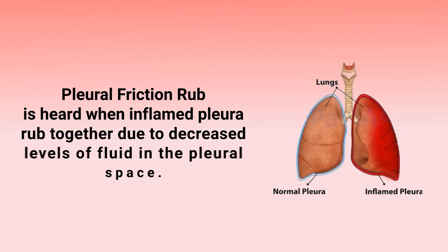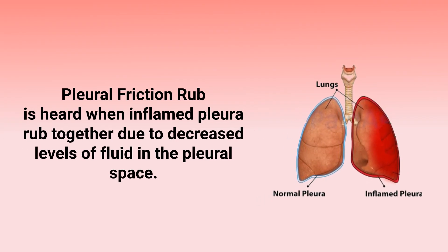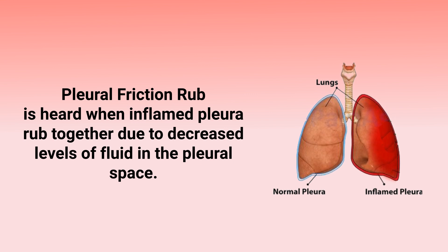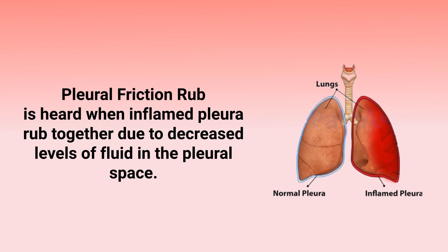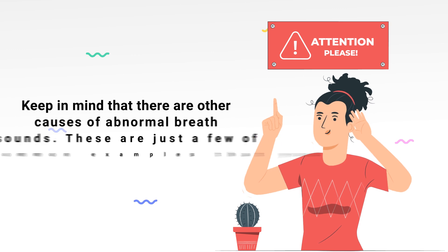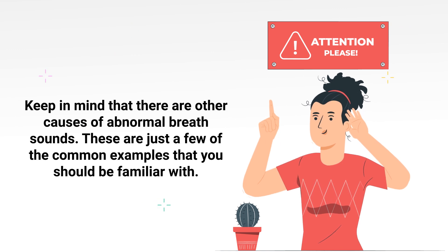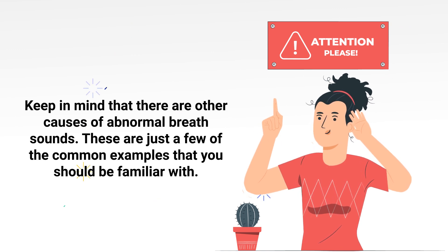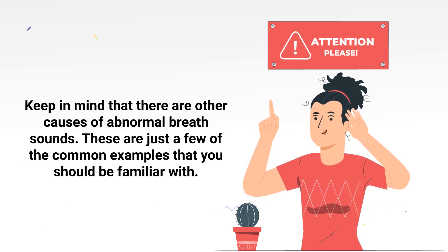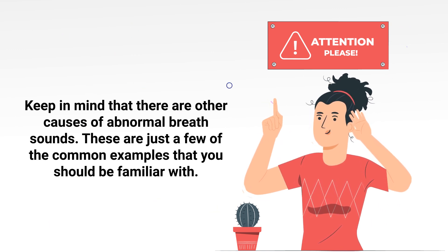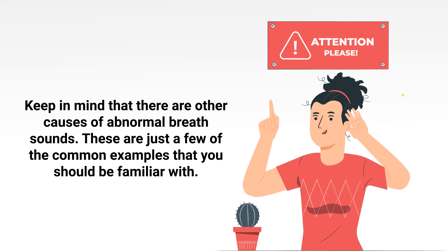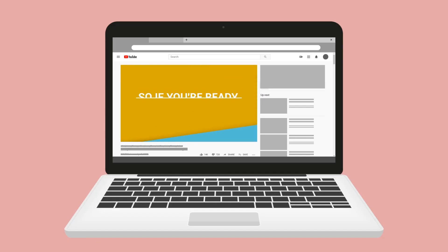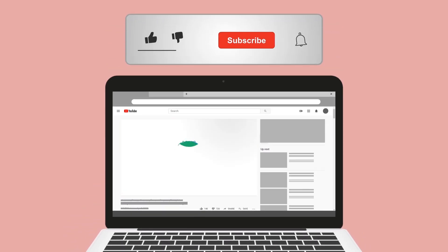A pleural friction rub is heard when inflamed pleural surfaces rub together due to decreased levels of fluid in the pleural space. Keep in mind that there are other causes of abnormal breath sounds — these are just a few of the common examples that you should be familiar with.